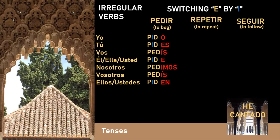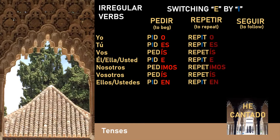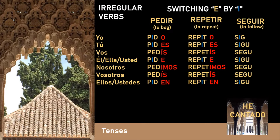Usted pide, nosotros pedimos, vosotros pedís, ellos/ustedes piden. For repetir: yo repito, tú repites, vos repetís, él/ella/usted repite, nosotros repetimos, vosotros repetís, ellos/ustedes repiten. And for the verb seguir: yo sigo, tú sigues, vos seguís, él/ella/usted sigue, nosotros seguimos, vosotros seguís, ellos/ustedes siguen.